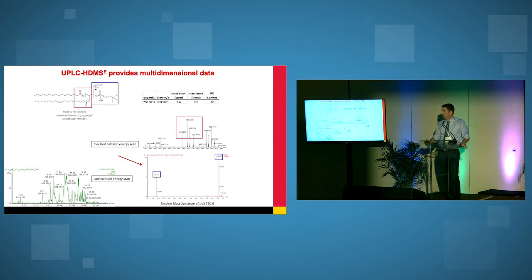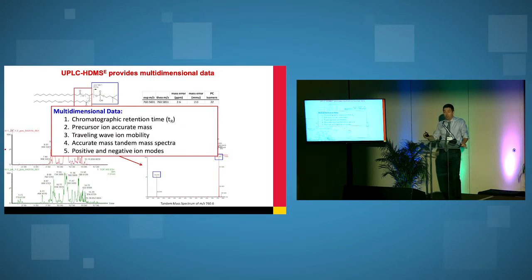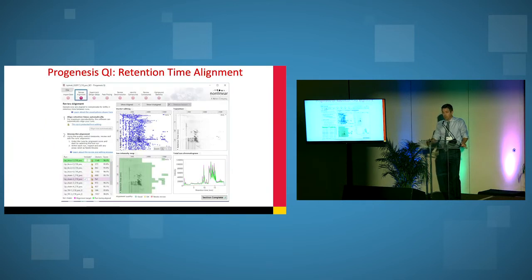So that's what some of the data looks like. The end result of that is that we get multi-dimensional data. We were able to look at the chromatographic retention time. We get precursor accurate mass. With ion mobility we can get drift time. The drift time can be corresponded back to collisional cross section. We get tandem mass spectrum. And this, once again, is done in positive and negative ion modes.